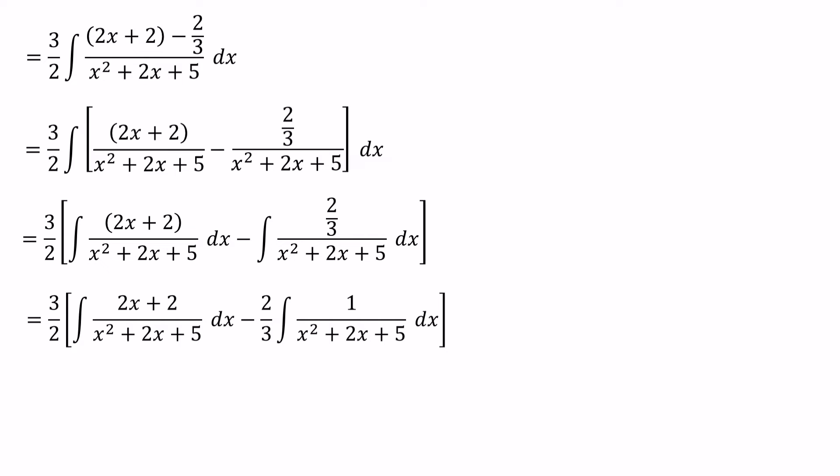The integral of 2x plus 2 over x squared plus 2x plus 5 we can write as ln of the modulus of the denominator, or ln of x squared plus 2x plus 5. To simplify the second integral we can use completing the square of the quadratic polynomial.